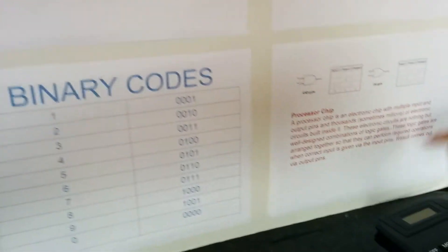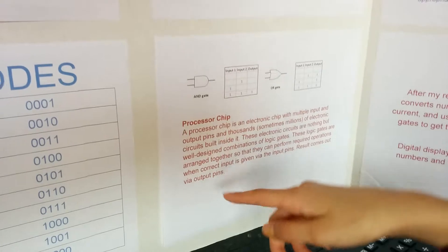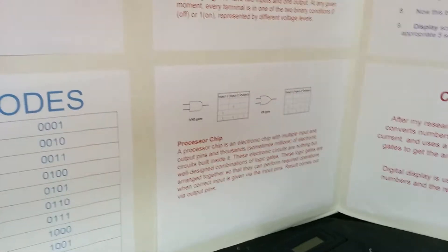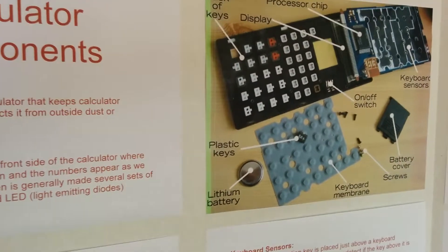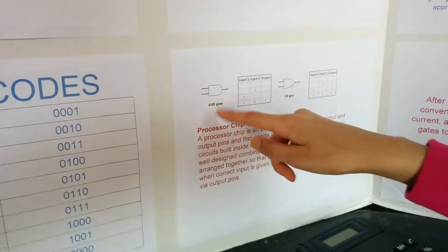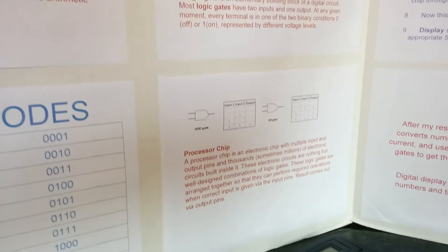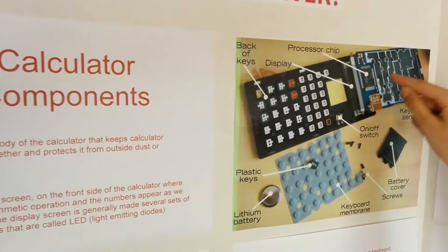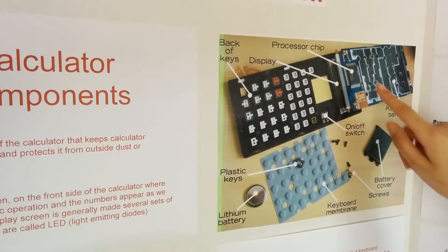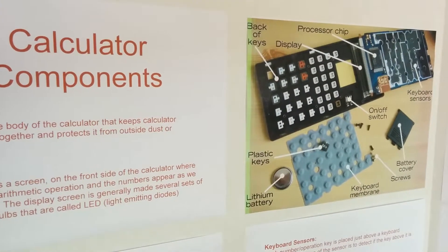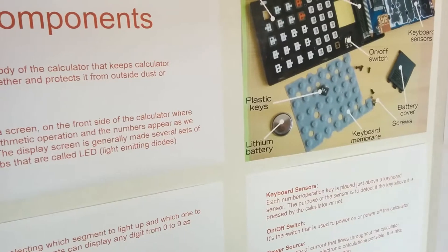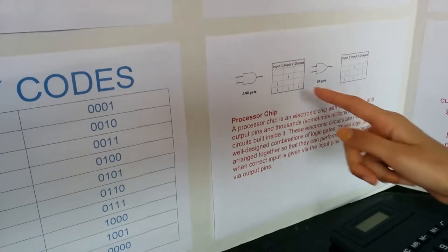And let's learn about the processor chip and logic gates. The processor chip is a small chip in the calculator that does all the calculations. But how does it do it? The logic gates mainly do all the calculations. There's a logic gate for each operation.